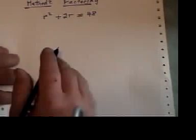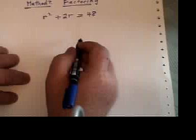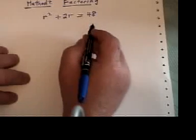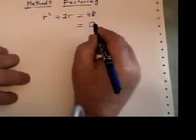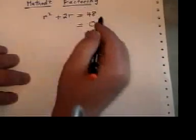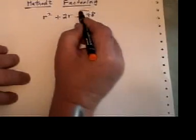Okay, this is method number two, factoring. The very first thing we do is, for all factoring, make sure that the right-hand side equals zero. Or the left-hand side. Make sure one side equals zero.